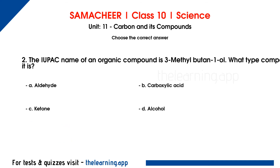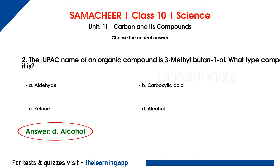Second question. The IUPAC name of an organic compound is 3-methyl-butan-1-ol. What type of compound is it? Options are A. Aldehyde, B. Carboxylic Acid, C. Ketone, D. Alcohol. Correct answer is option D, Alcohol. The suffix '-ol' indicates the OH functional group. If we find OH in the organic compound, it is an alcohol. The suffix '-oic acid' indicates a carboxylic acid compound, and '-ol' indicates an alcohol compound.